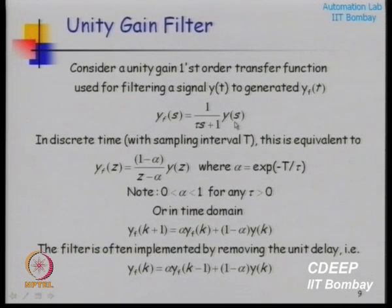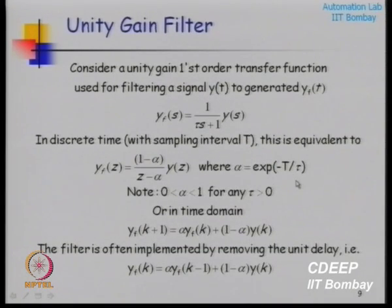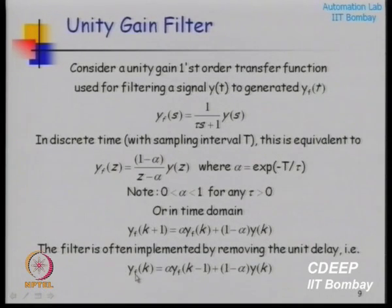This first-order transfer function maps to a difference equation — a z-domain transfer function. There is a mapping between alpha and the time constant: alpha equals exp(−T/τ), where T is the sampling time. You might be more comfortable thinking in terms of a time constant or a frequency rather than discrete-time alpha. The filtered signal update is: new filtered value = alpha × old filtered value + (1−alpha) × new input.